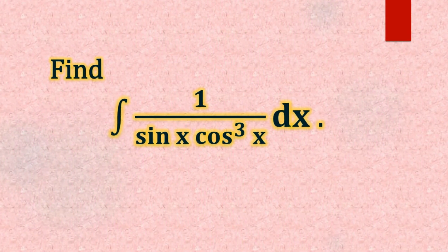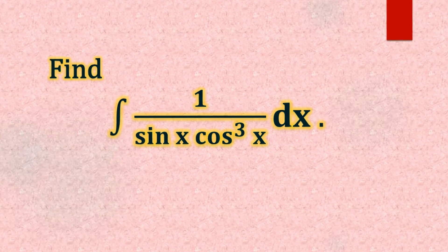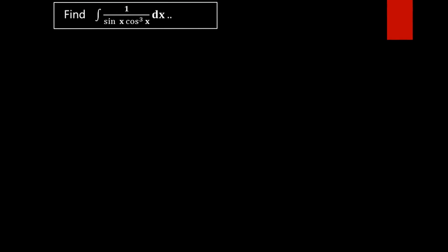Find the integral of 1/(sin x · cos³x) dx. We have to find the value of this integral, that is integral of 1/(sin x · cos³x) dx. We can see that this function is not in an integrable form.